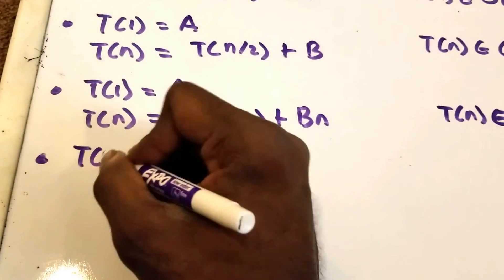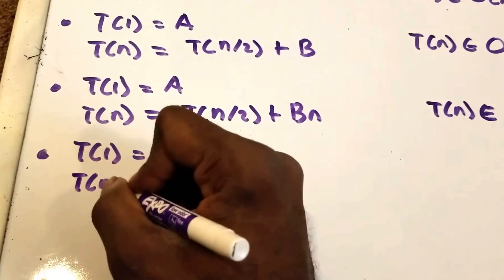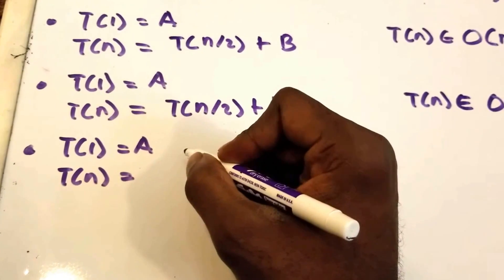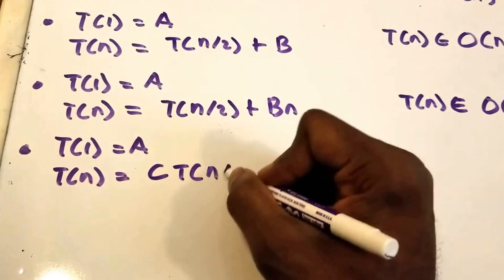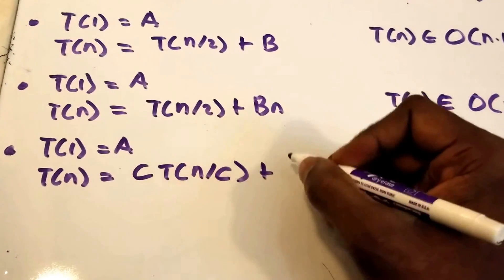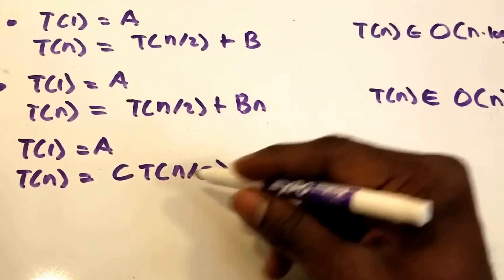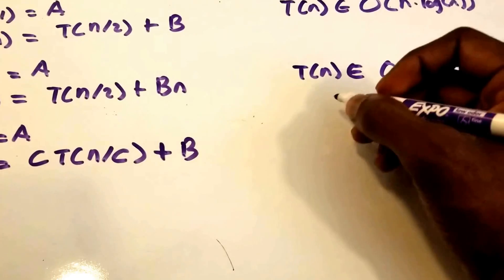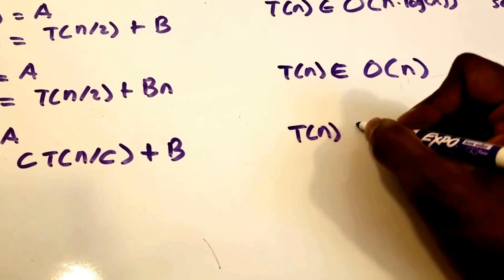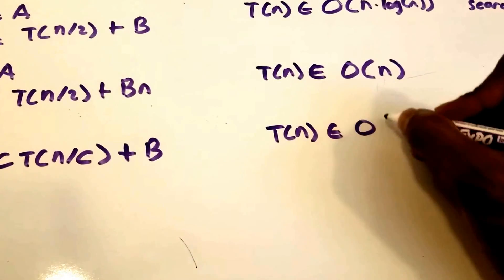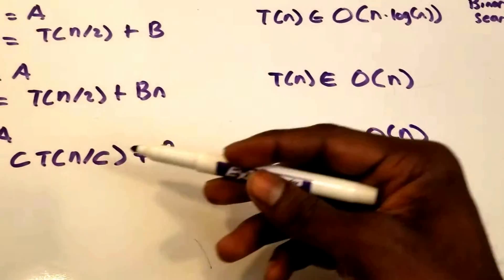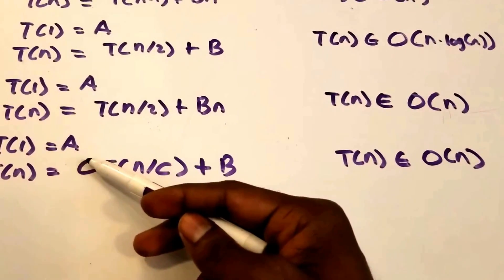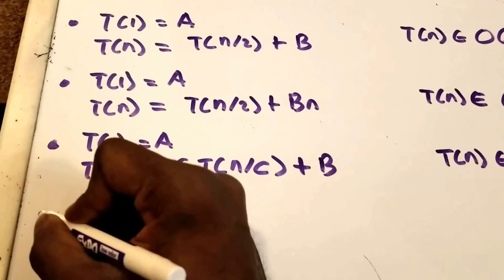Maybe T(1) = a, and then T(n) = C·T(n/C) + B, where C is some non-negative constant. Then T(n) belongs to O(n). I can't think of a popular algorithm right now at the top of my head that has this recurrence relation, so let's just move on.